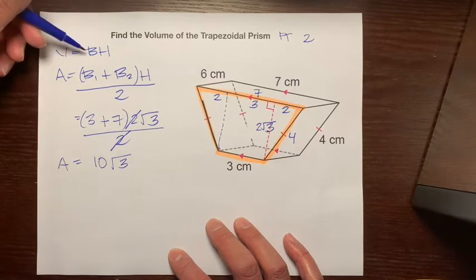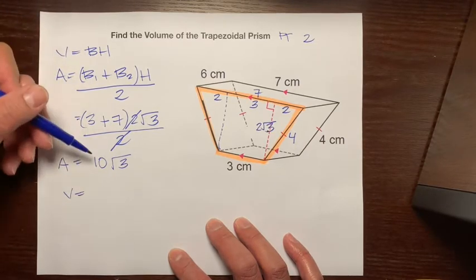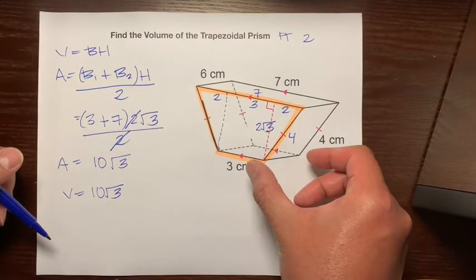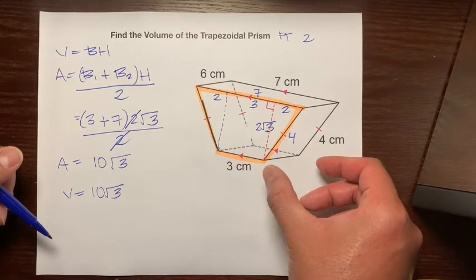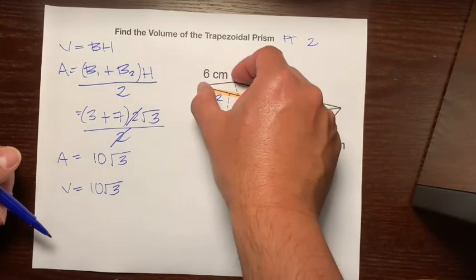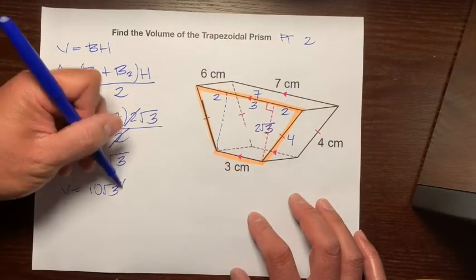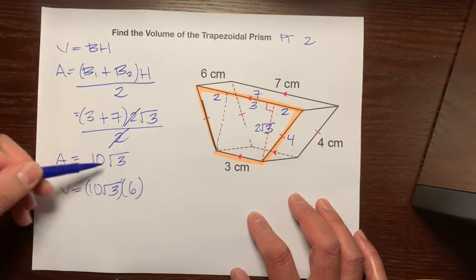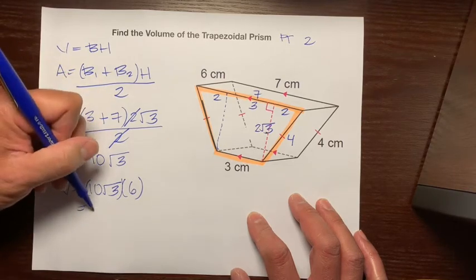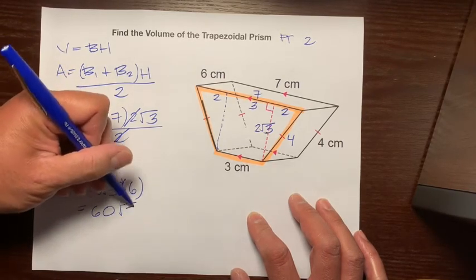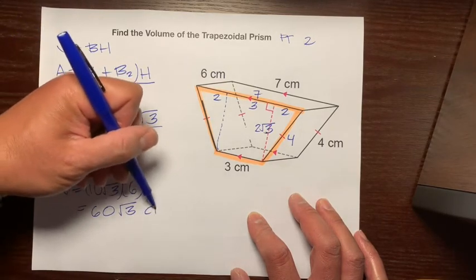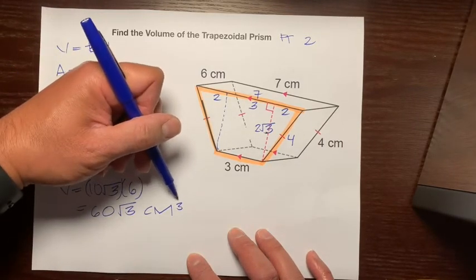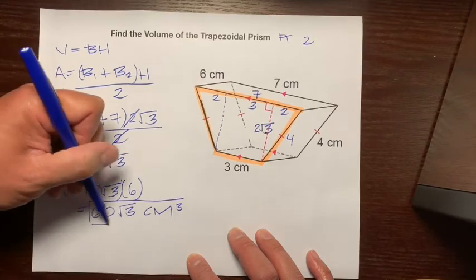Okay. So now we could use this formula, the volume formula. So V equals base area, which is 10 radical three times the distance between these two bases, which is the trapezoid. There's no number here. There's no number here. But look at that. There's a number there. Which is six. So let's just multiply all this out. The six can multiply with a 10. So 10 times six is 60 radical three. And remember, volume is how many cubes can fit inside. So centimeters cubed. So there's your final answer.